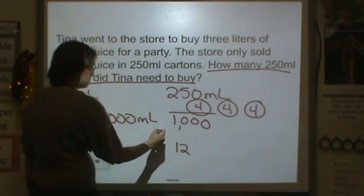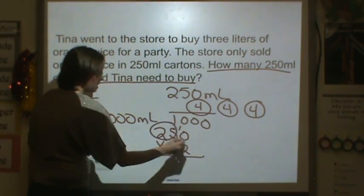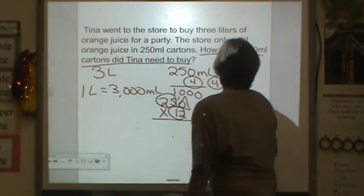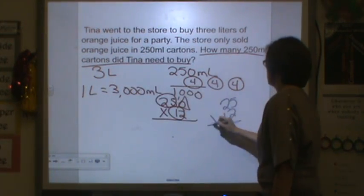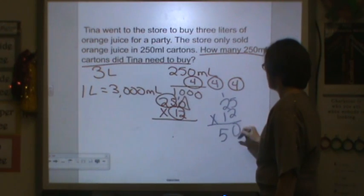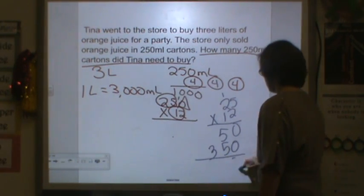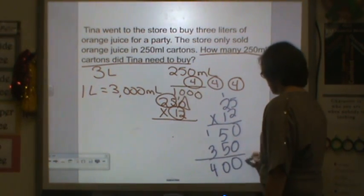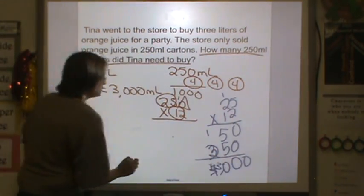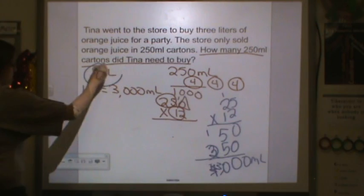To check, we could do 12 times 250. We're going to do our basic fact triangle with zeros, so 25 times 12. 2 times 5 is 10, carry the 1, drop the zero. 2 times 2 is 4 plus 1 is 5. Drop that zero. 1 times 5 is 5. 2 times 1 is 2—that would make this a 3. Sorry about that. So we have 3,000 milliliters, which is the same as 3 liters.